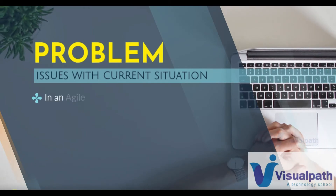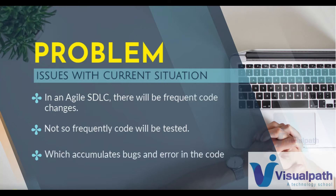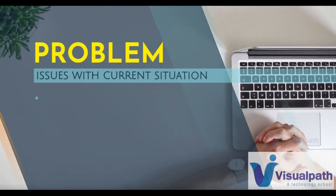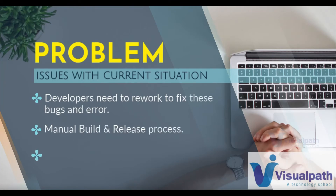There are regular code changes, also called commits or pull requests. Developers will be dependent on the build and release team to test the code and move it to the next level in the release cycle. The code will not be tested frequently, so if there are any bugs or errors they will be known late. Due to this, bugs and errors keep accumulating. When a problem goes deeper, developers need to rework to fix these bugs and errors, which is a time-consuming process, and teams are already approaching the deadline.